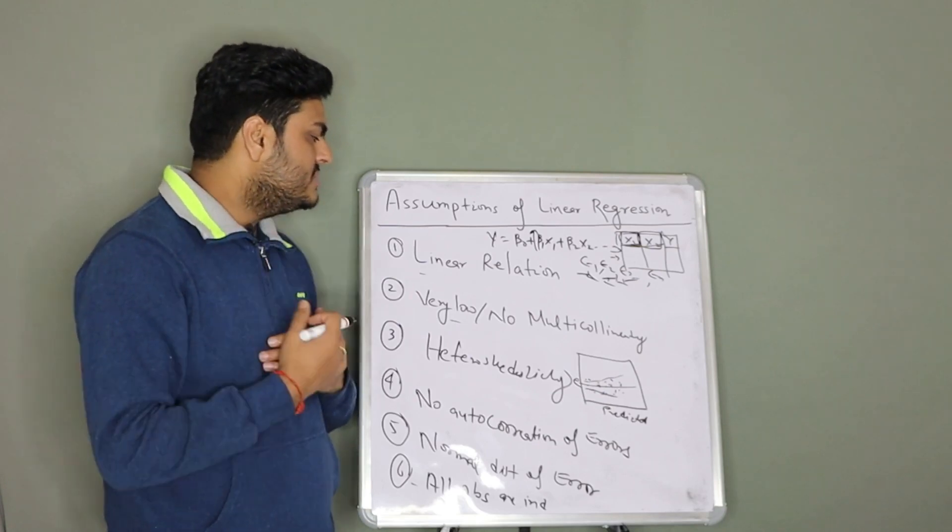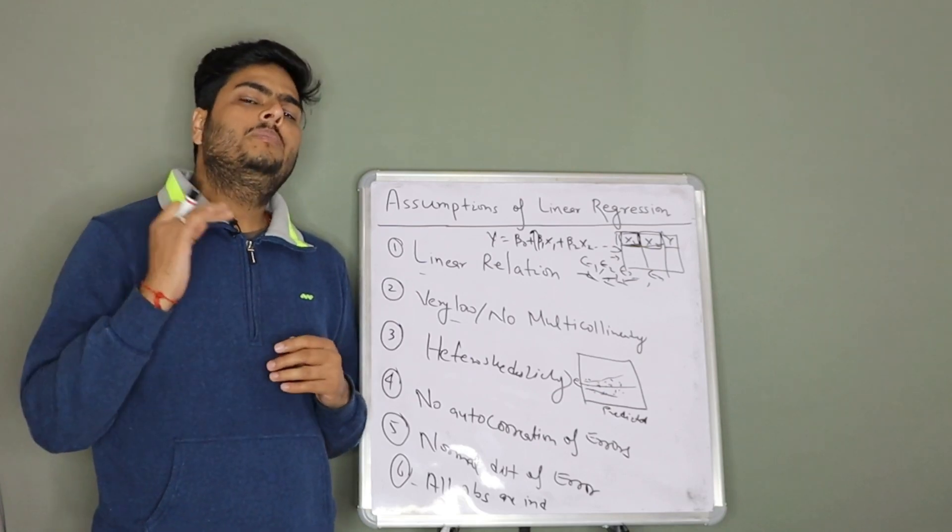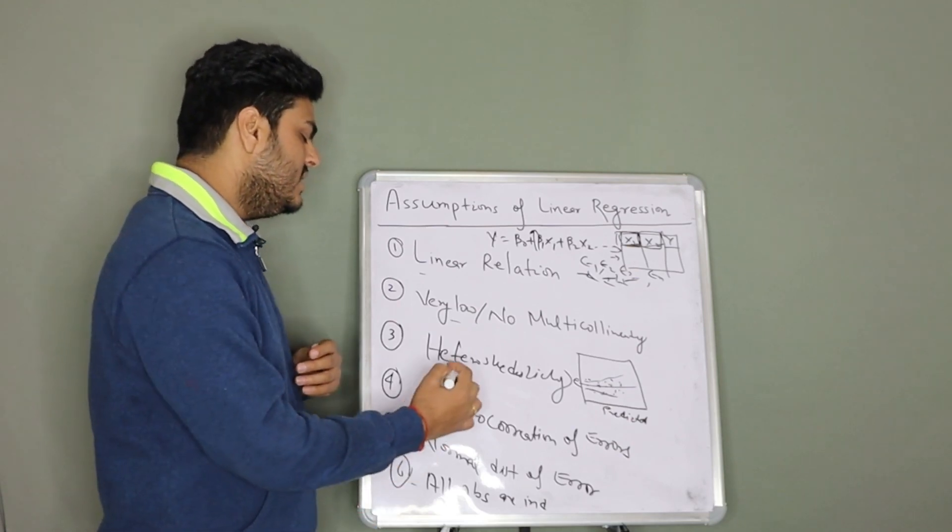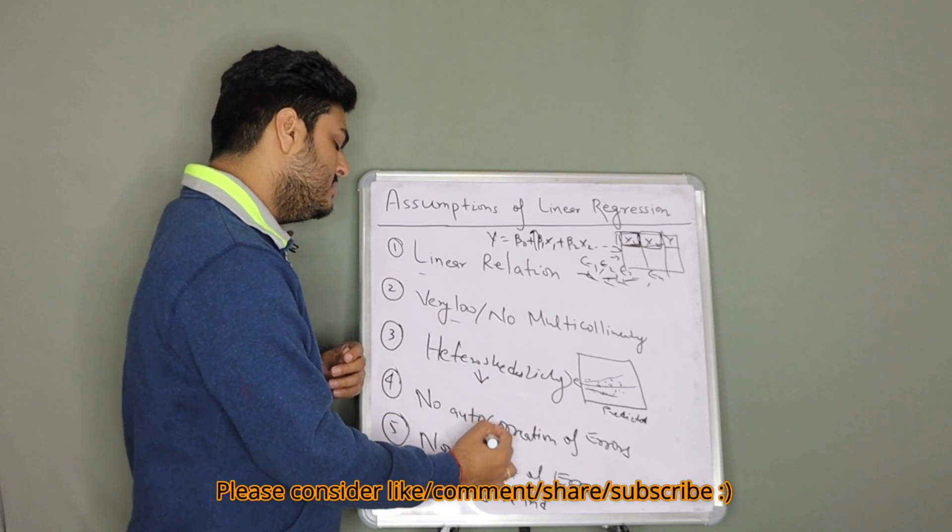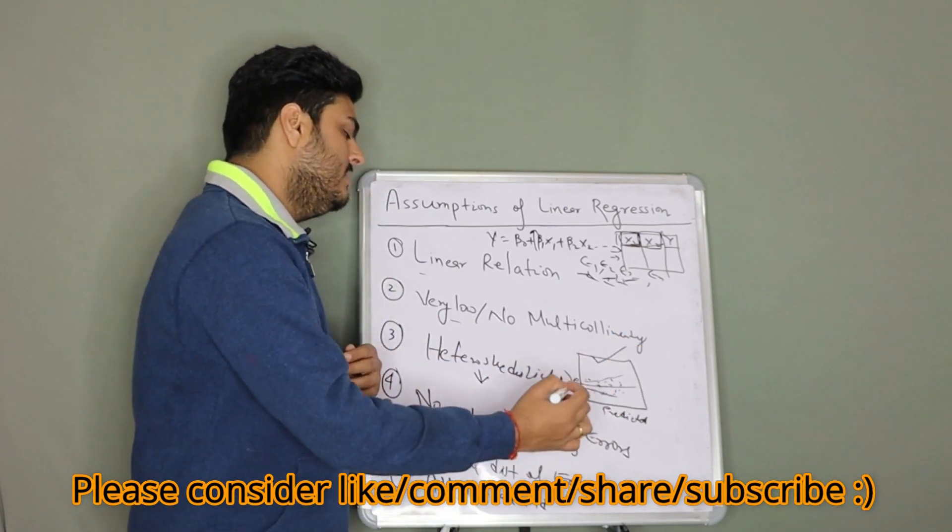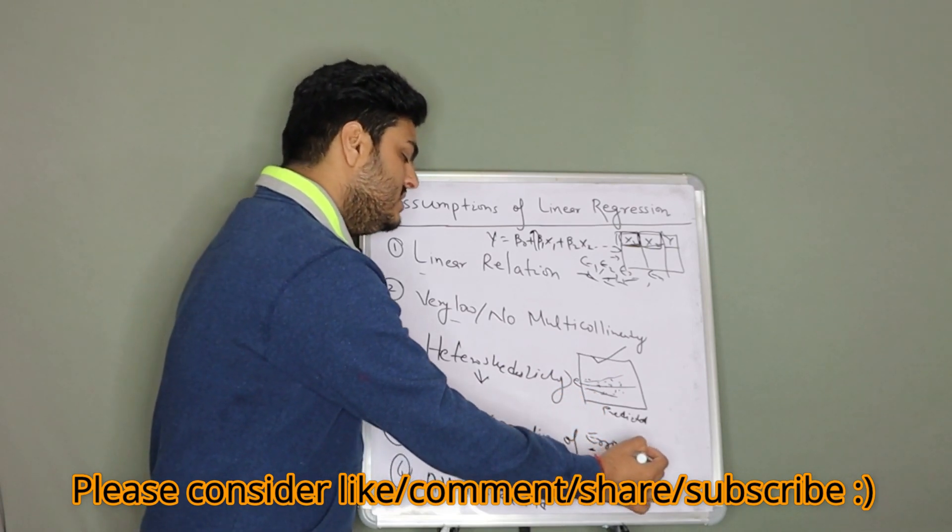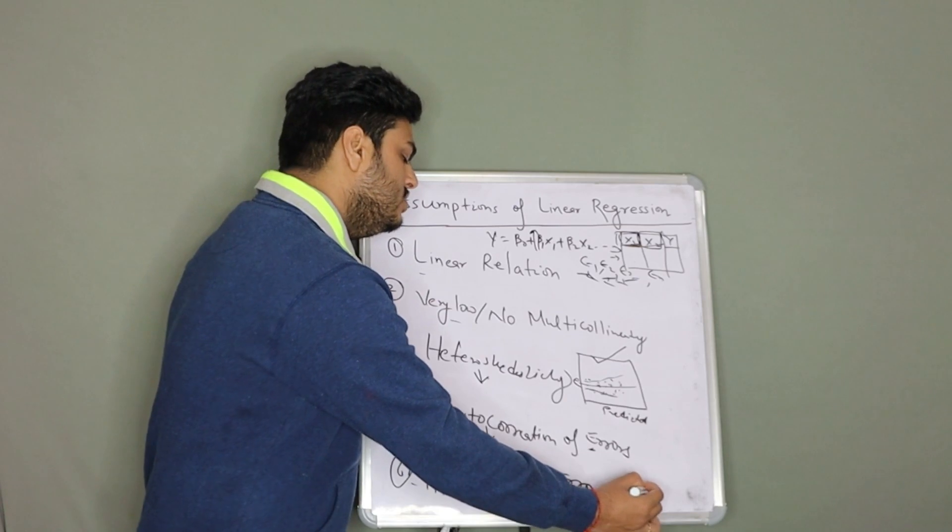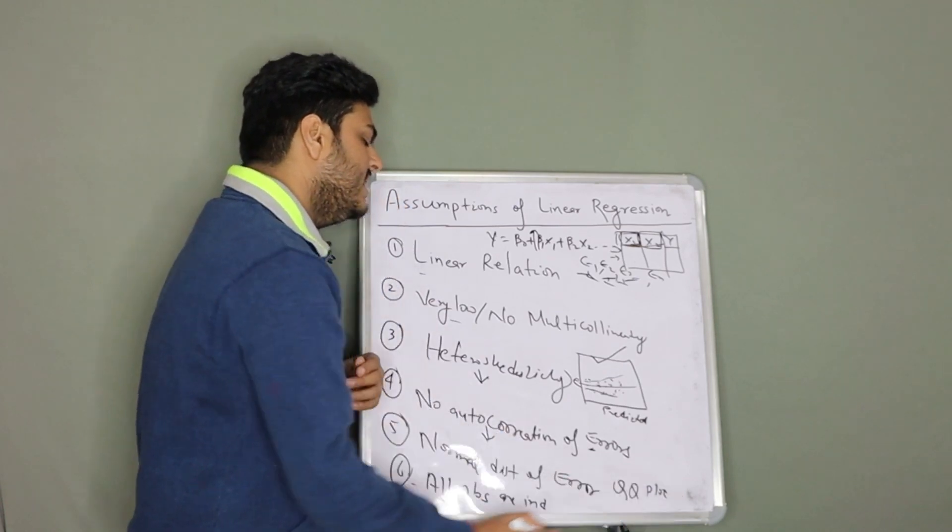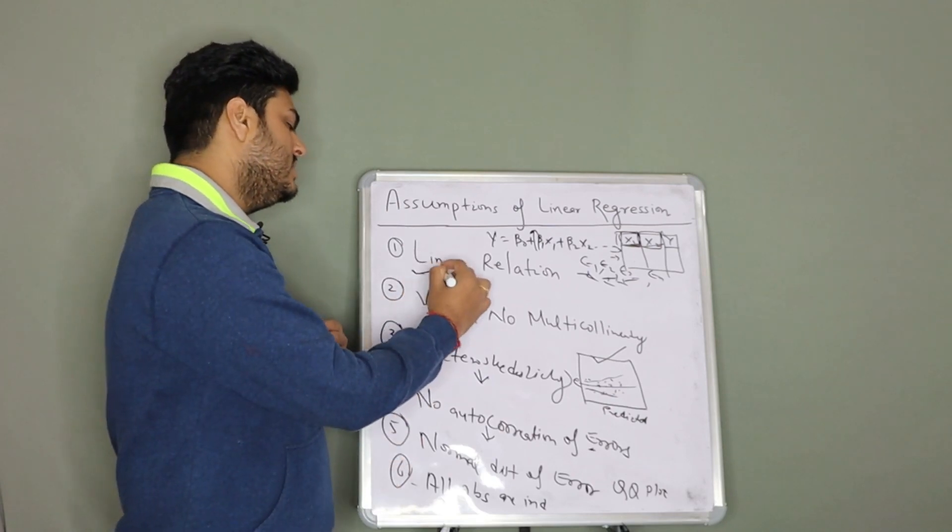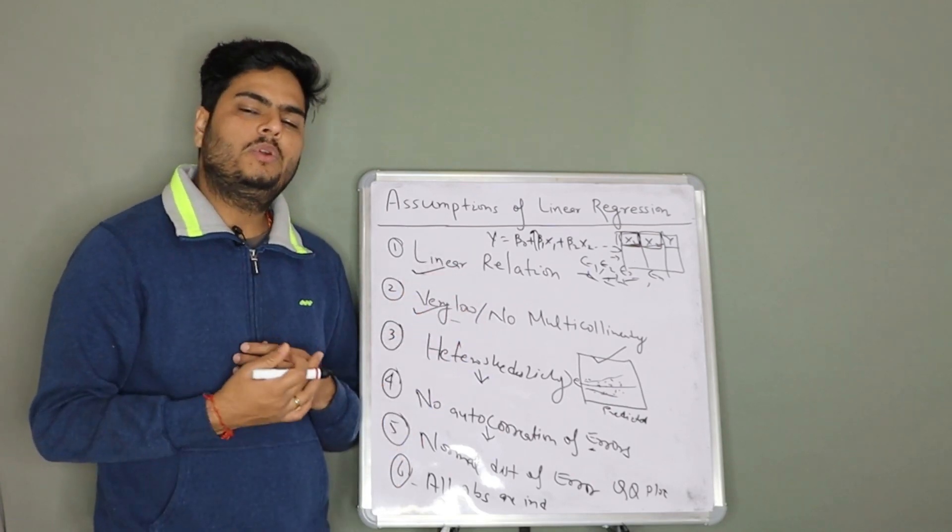People might ask you how will you check these things? For checking these things, once you have fit a linear regression model, there are many plots. This plot you will get as an output. Normality of error you can check using something known as Q-Q plot. And there are many plots using which you can check these phenomena. These two things you can check using basic scatter plot itself.